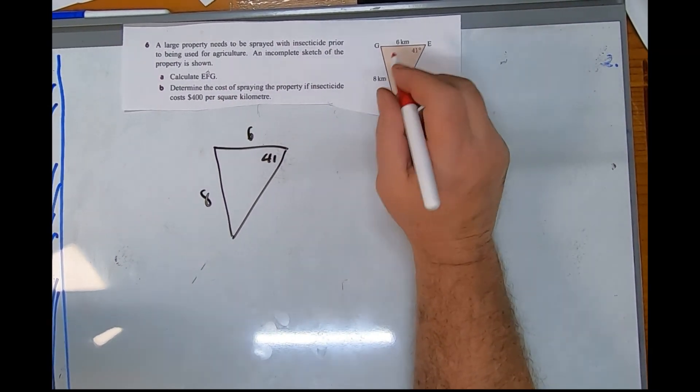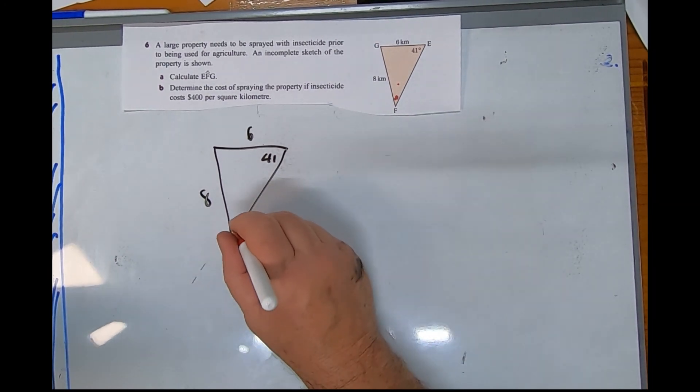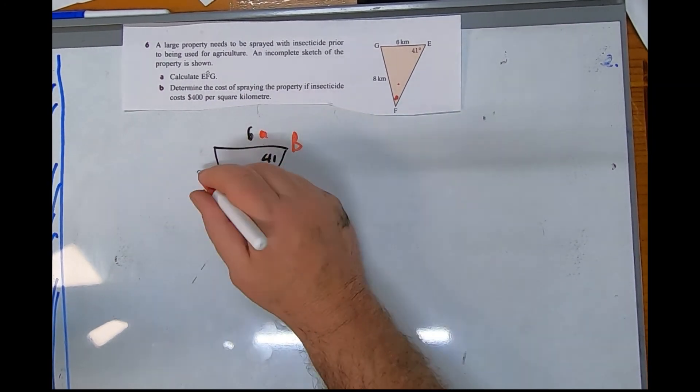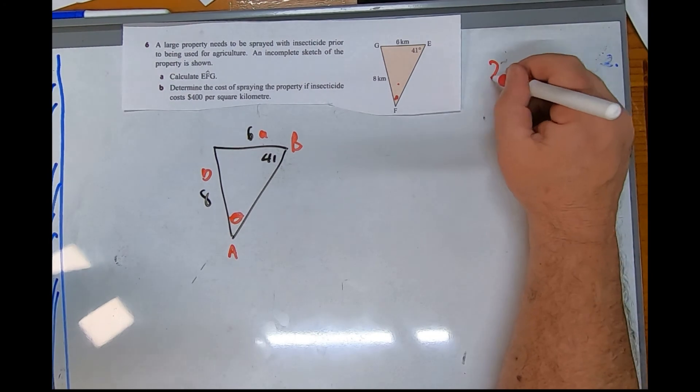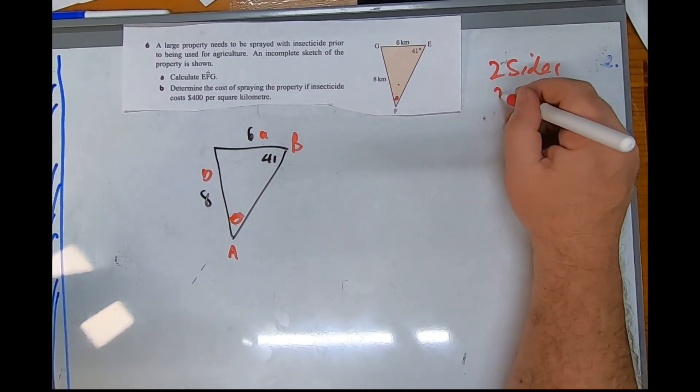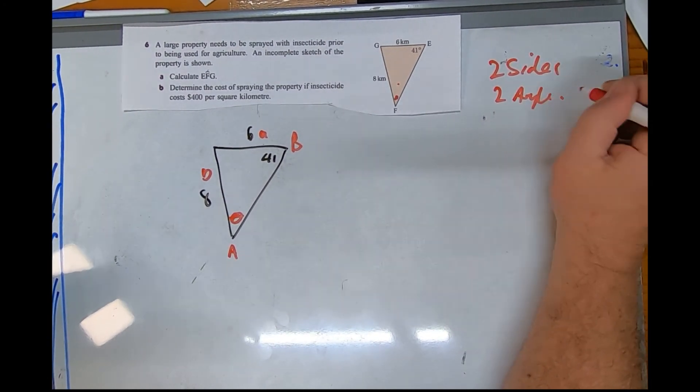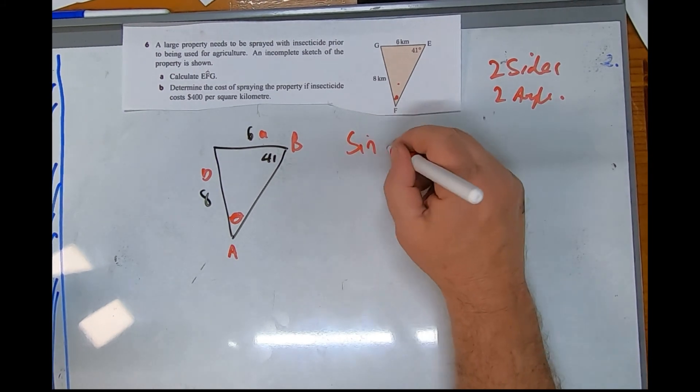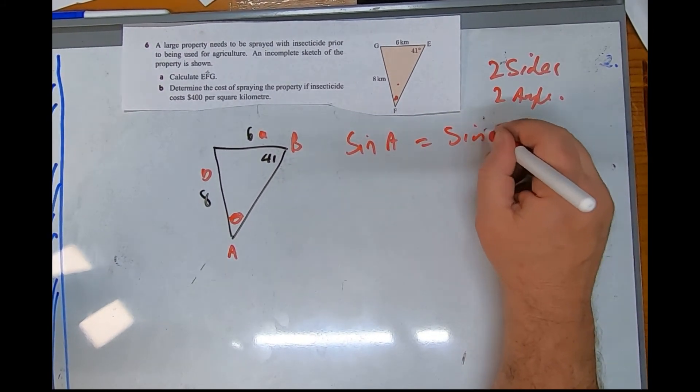So that's opposite the six, so I'm going to put my theta here. Well if that's a, that's little a, let's put a b and a little b here. I'd use two sides and two angles, so it's going to be sine rule. I'm ready to go.